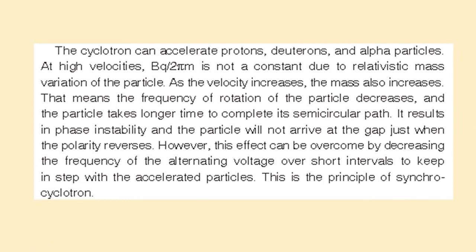Normally, the synchro-cyclotron is used to accelerate electrons, but you typically use a betatron for electrons, because the relativistic mass variation is very much appreciable — easily observable — in electrons. That is why you do not use a cyclotron to accelerate electrons. And that is all about the cyclotron. This was only a revision. Thank you.